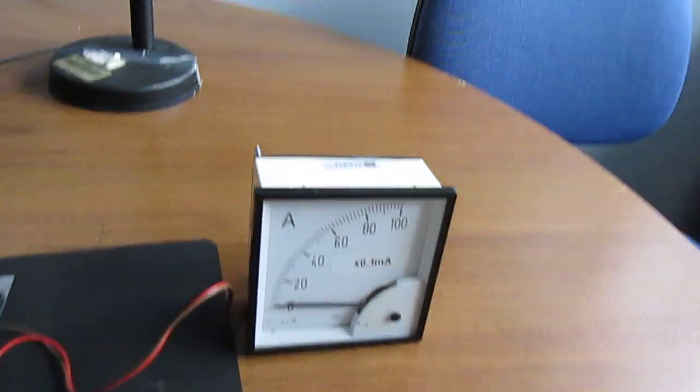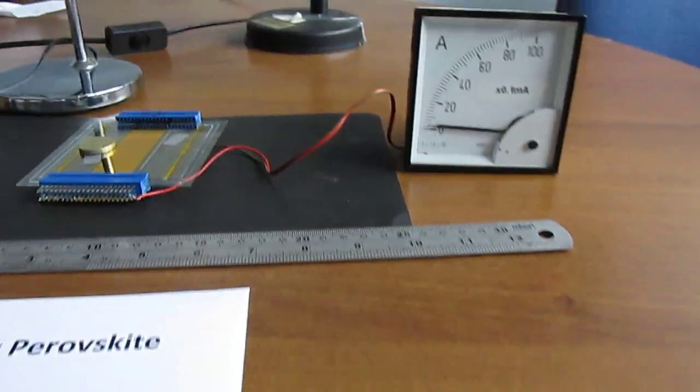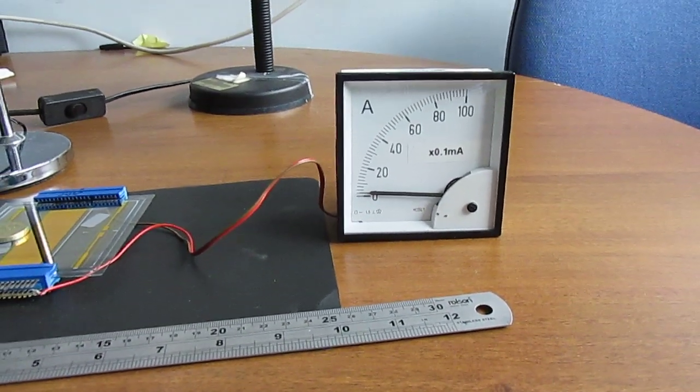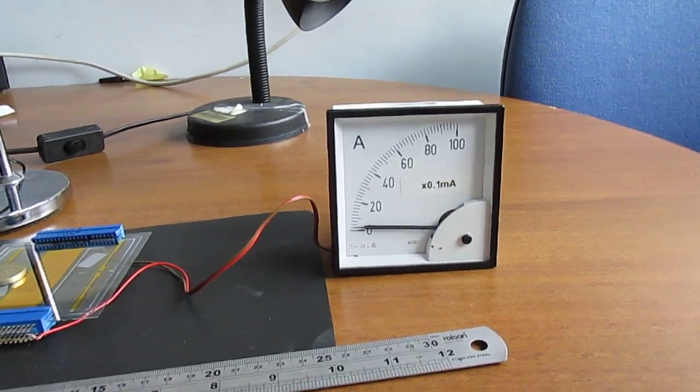And here I have an ammeter which measures the current. You can see even with the diffused light, about 0.1 of a milliamp of current flowing.